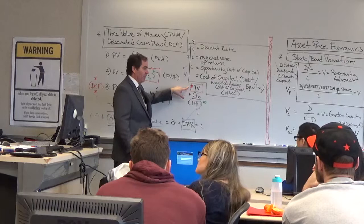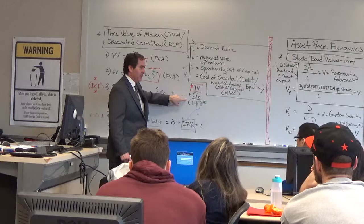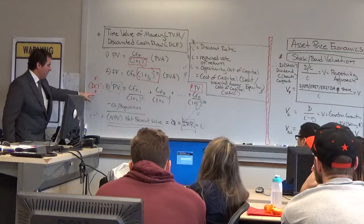It could be the equipment, it could be the firm, it could be the stock. So I'm going to get those two cash flows in the last period. I'm going to discount these back and get the present value. That's called discounted cash flow.